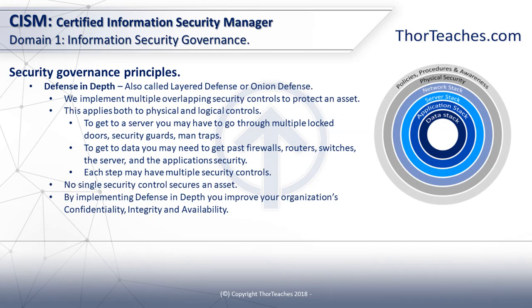Defense in depth is a layered or onion defense — we implement multiple overlapping security controls to protect an asset. To reach a physical server, for example, you go through multiple doors, security guards, man traps, a locked rack cabinet, a password-protected KVM console, and locked USB ports. Each control alone might be easy to bypass, but together they make it much harder to reach an asset. Logically, we have firewalls, routers, switches, hardened servers, and hardened applications. No single control secures the asset, but all of them in unison make it as secure as needed, protecting confidentiality, integrity, and availability.